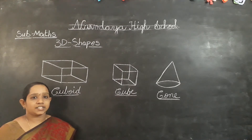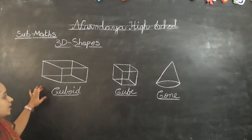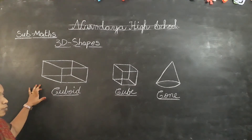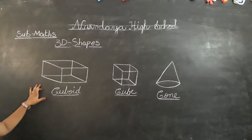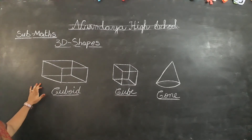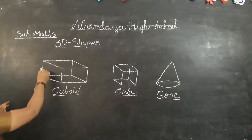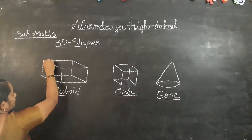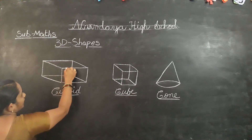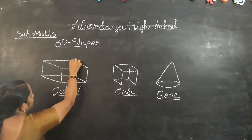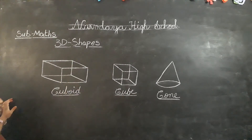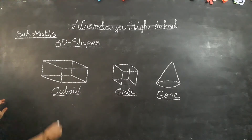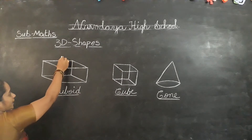These are 3D shapes. Now look children, this is a cuboid. Now count how many edges are in a cuboid. First of all, what is an edge? These lines are called edges. The joining lines of two faces are called edges.